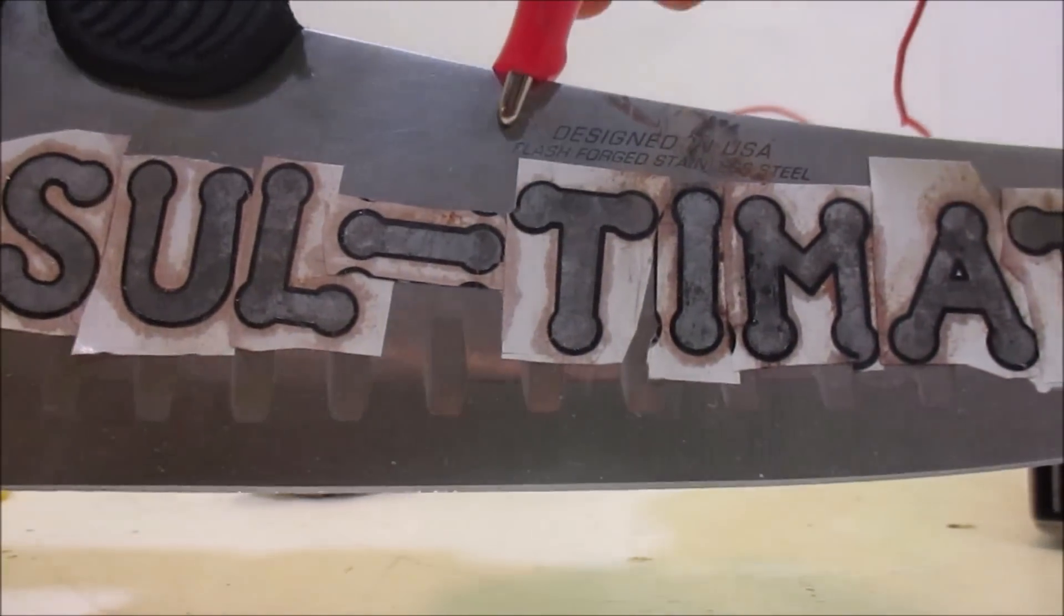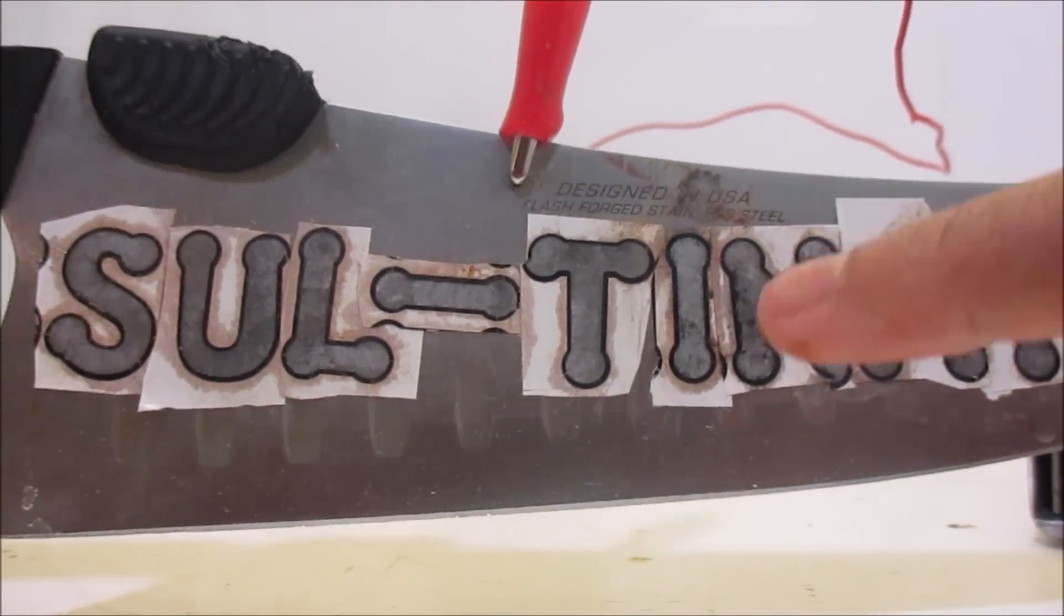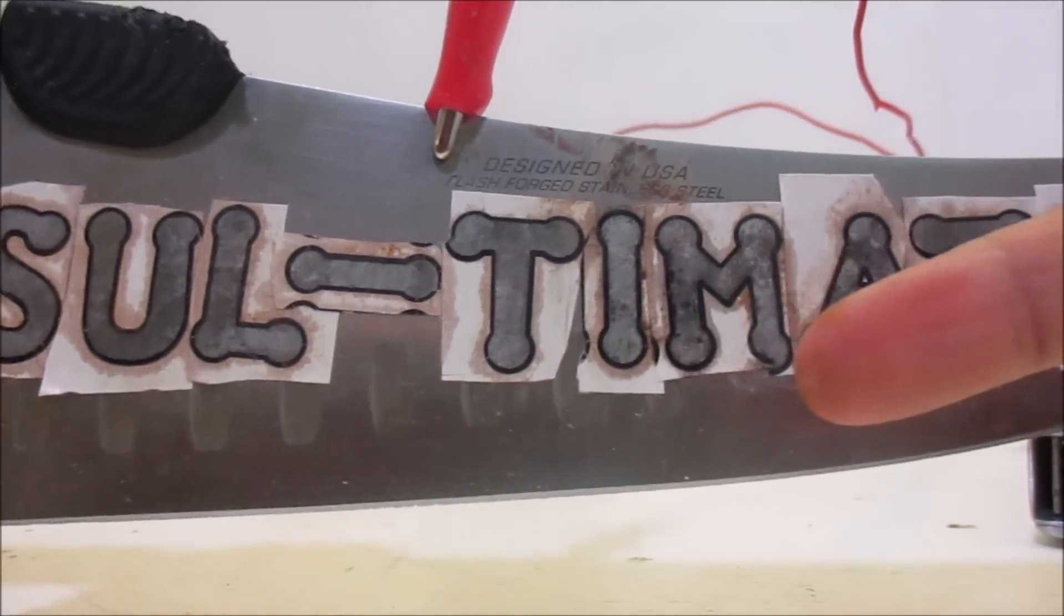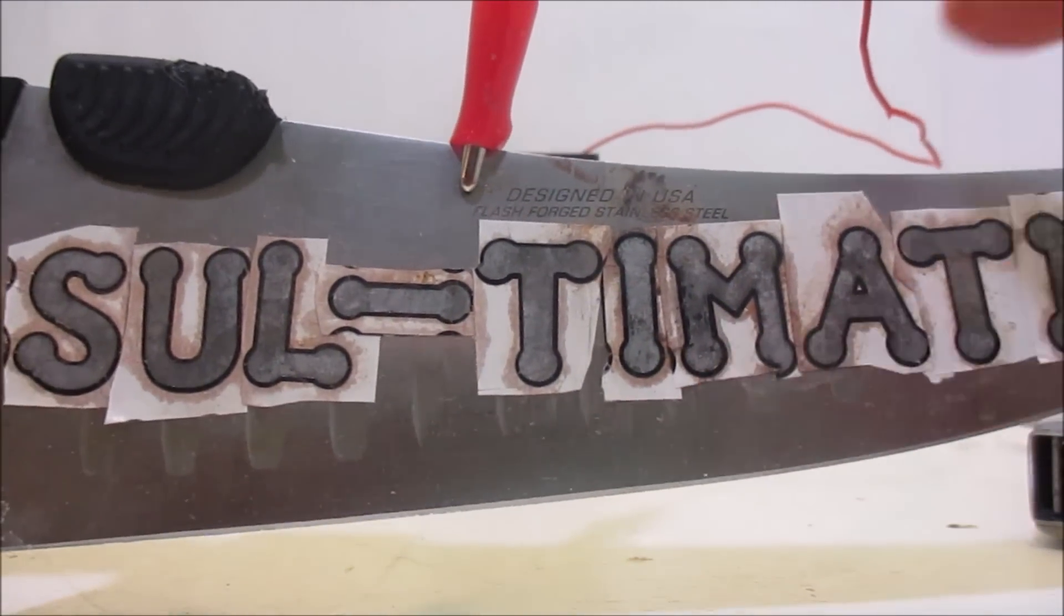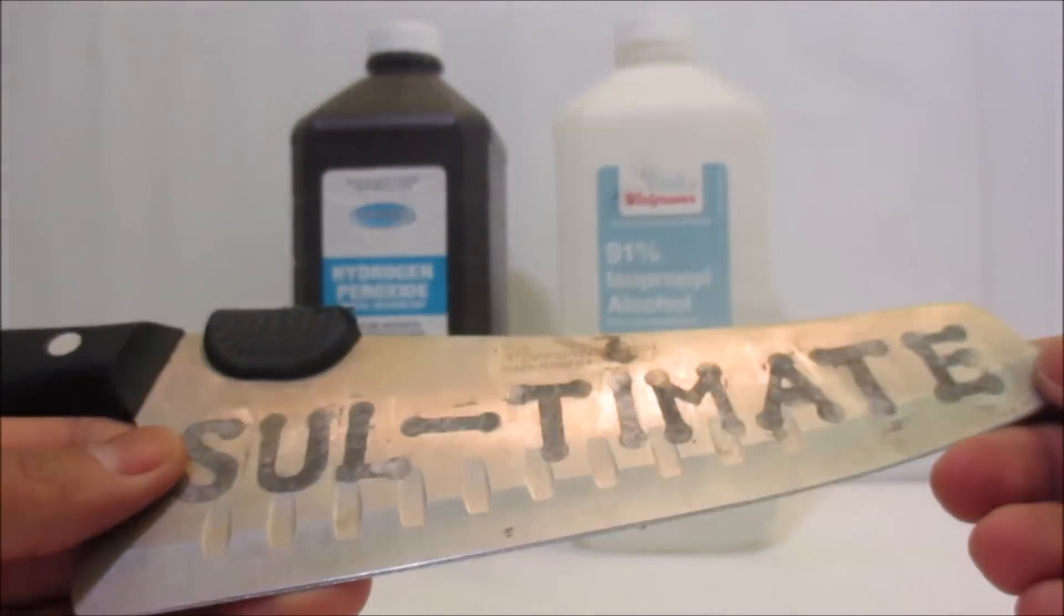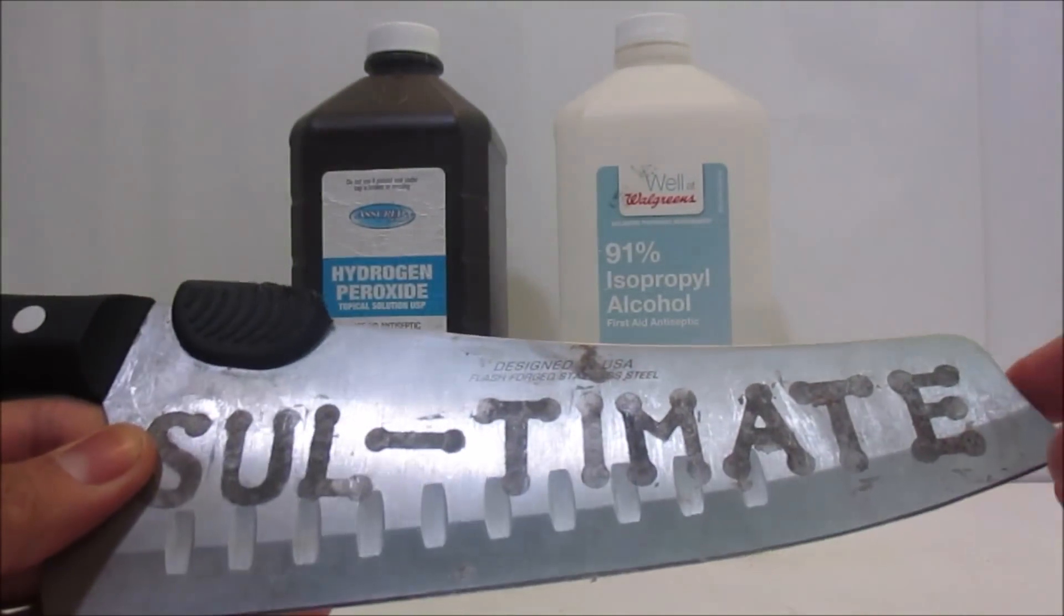After engraving each and every single one of the letters, you can finally peel off the sticker outlines. Now you can take rubbing alcohol and wipe the whole bare metal.